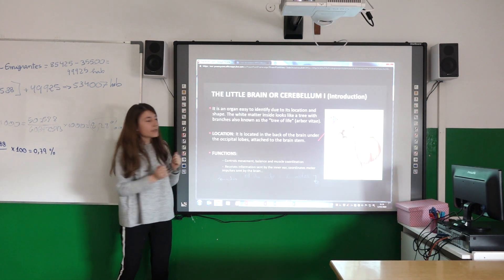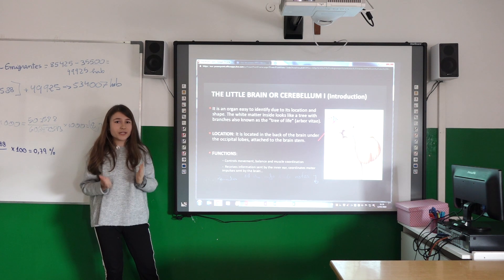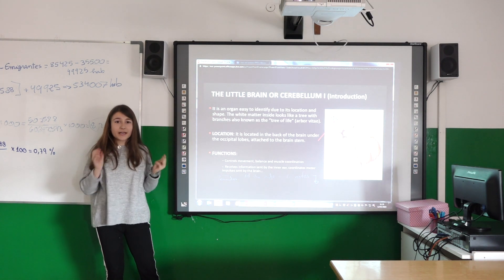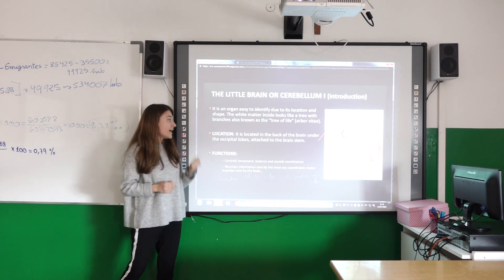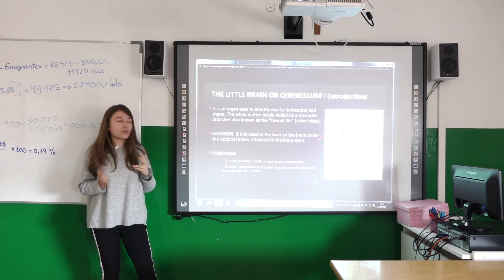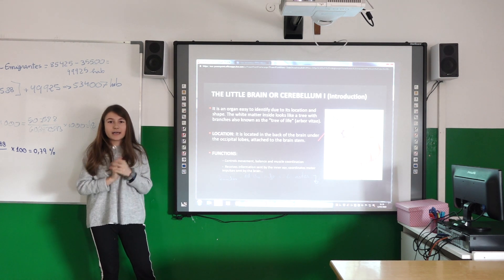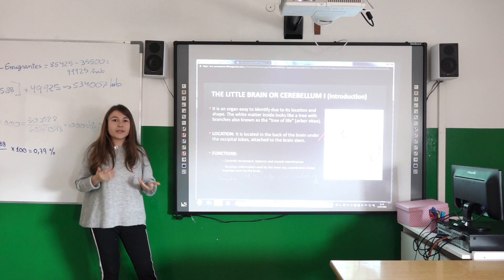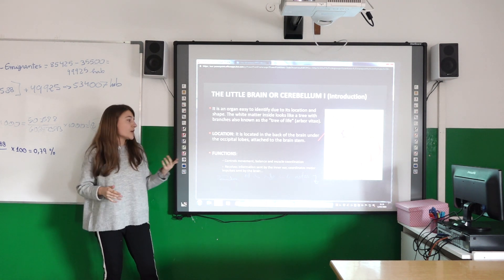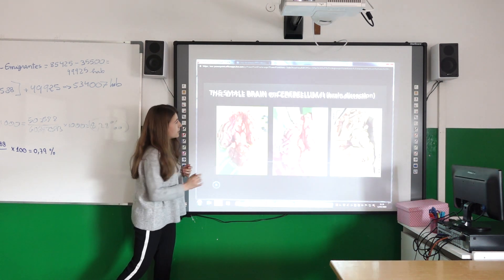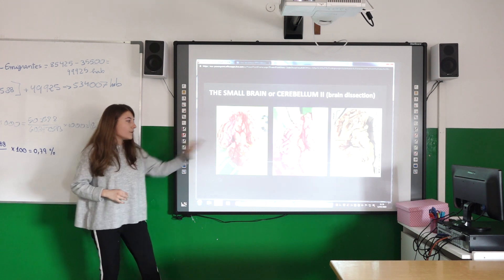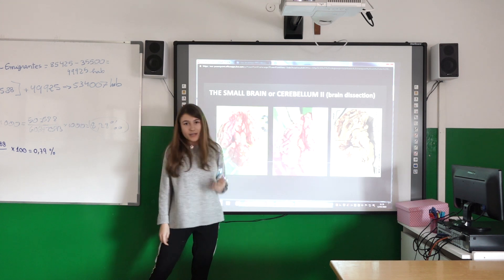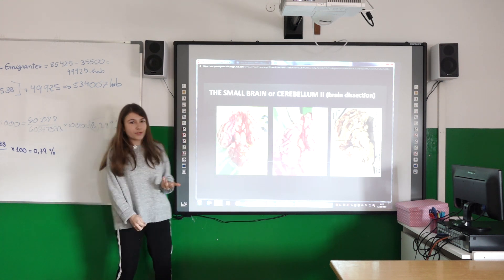The cerebellum is an organ very easy to identify because if we cut it we can see something like a tree, which is why it is called the tree of life. It is located at the back of the brain and it has different functions. It is very important when we are doing movements or exercise because it controls movement. Here you can see the photo of the cerebellum — it looks like a tree because it is called the tree of life.